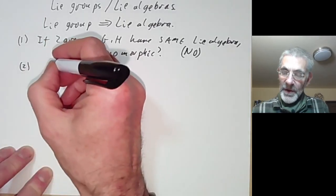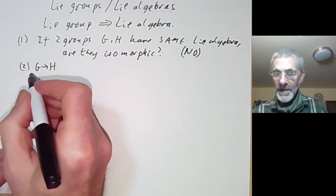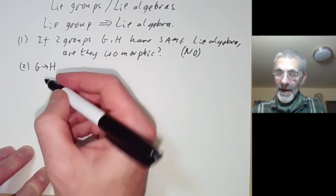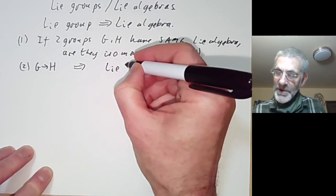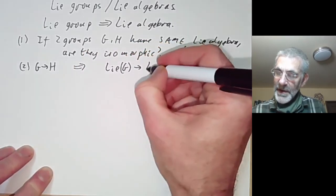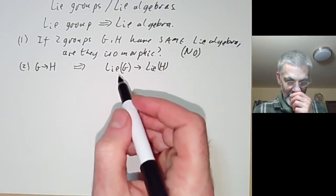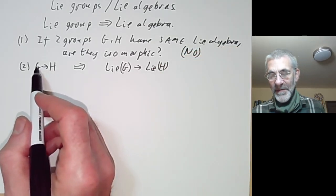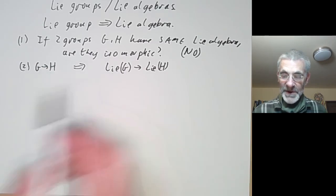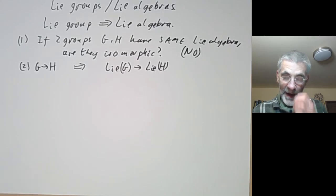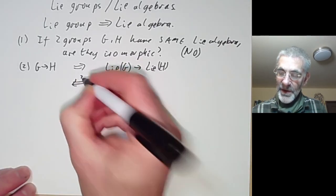Secondly, if we've got two groups G and H, suppose you've got a homomorphism from G to H. Then it's easy to check that you get a homomorphism from the Lie algebra of G to the Lie algebra of H. It maps the tangent space of the identity of G to the tangent space of the identity of H, and it's not difficult to check this preserves the Lie bracket. And we can ask, is the converse true?